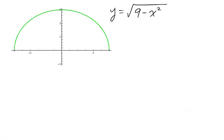Take for example the equation y equals the square root of 9 minus x squared. This equation graphs the top semicircle of a circle, but how do we know this?